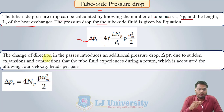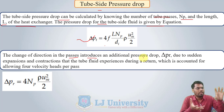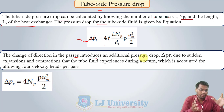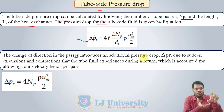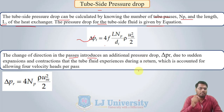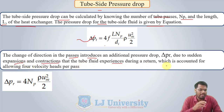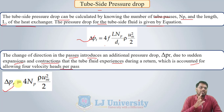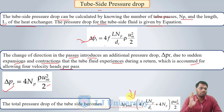There is an additional pressure drop because of the change of direction in the passes. In a shell and tube heat exchanger, when the fluid enters the shell, there is a larger area; when it enters the tube, there is a contraction of area. After passing one pass, the fluid again experiences a larger area — expansion. Due to this contraction and expansion, there is an additional pressure drop. This sudden expansion and contraction that the tube fluid experiences during return is accounted for by allowing four velocity heads per pass. The summation of these two equations gives the total tube side pressure drop.